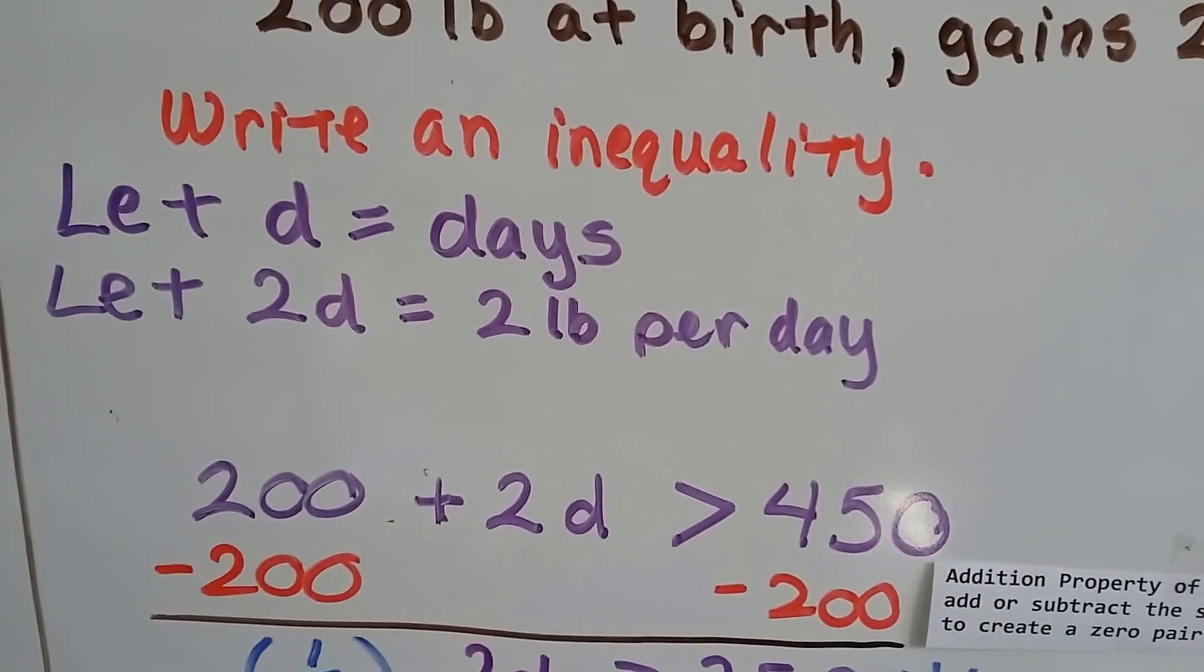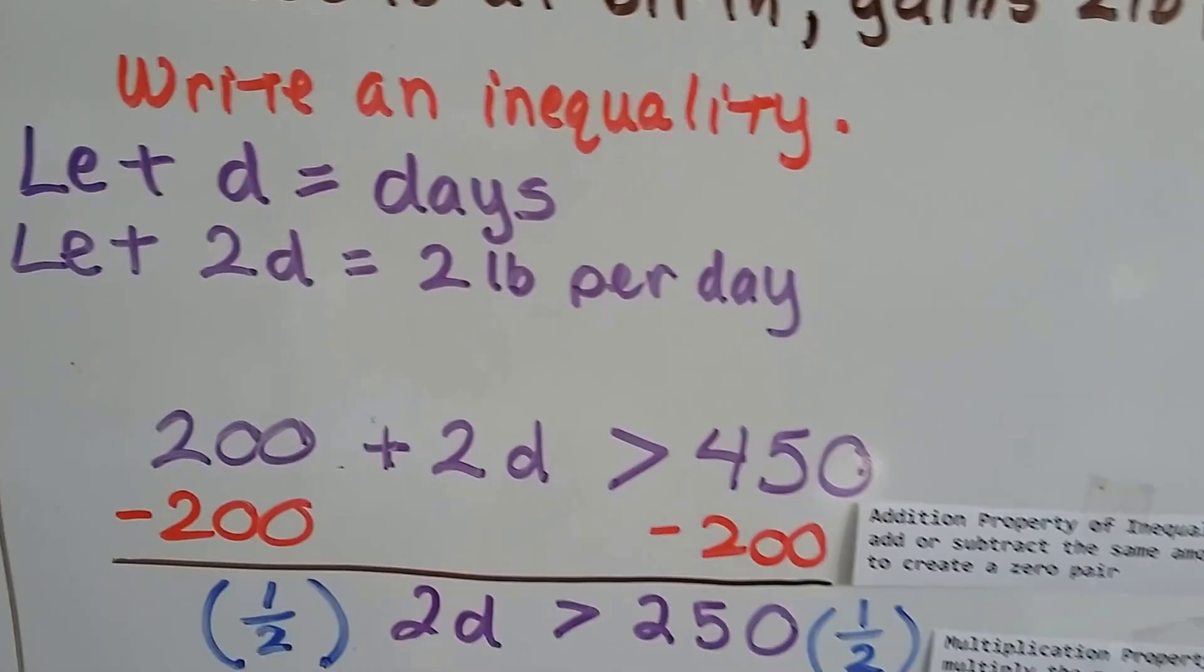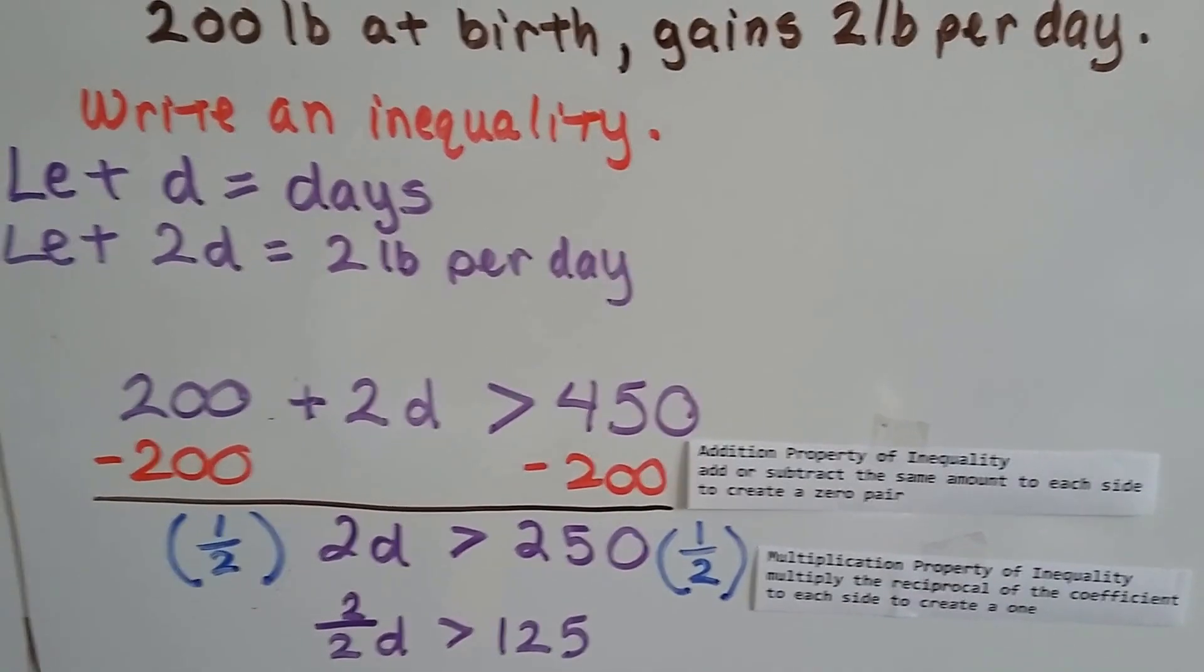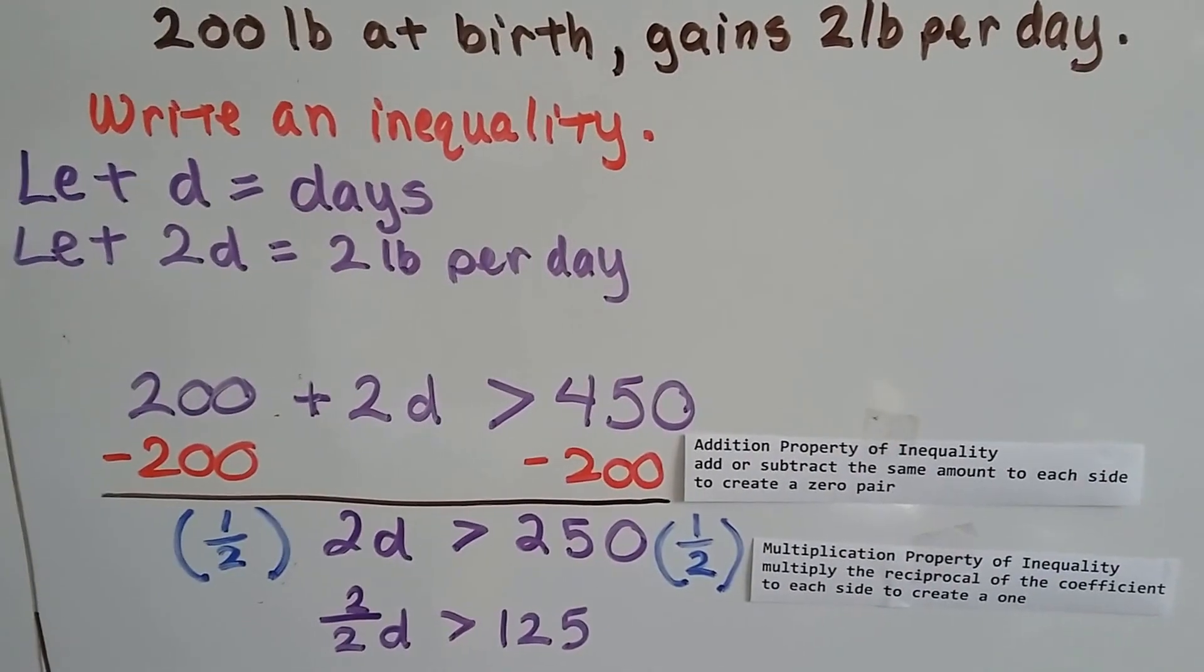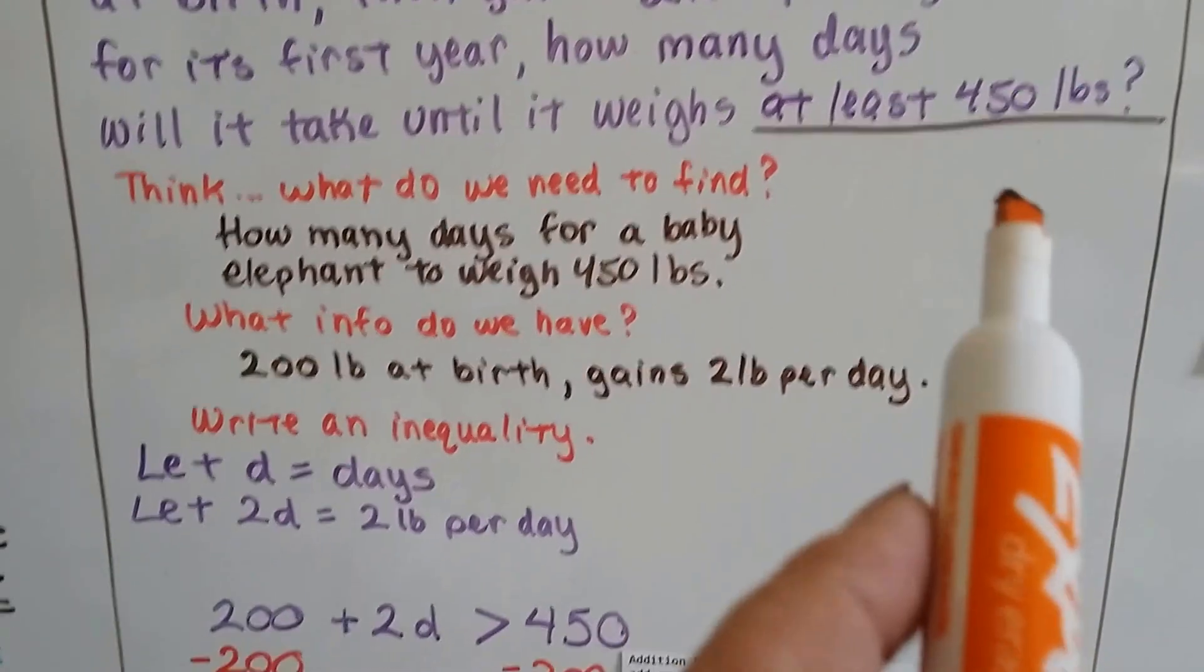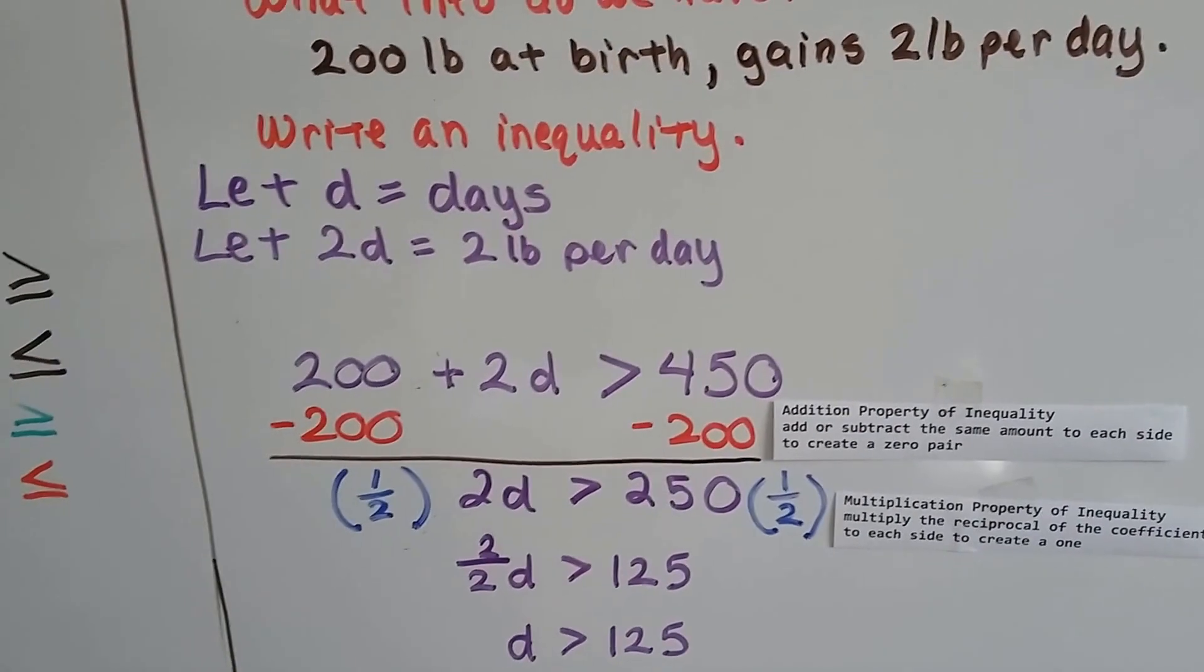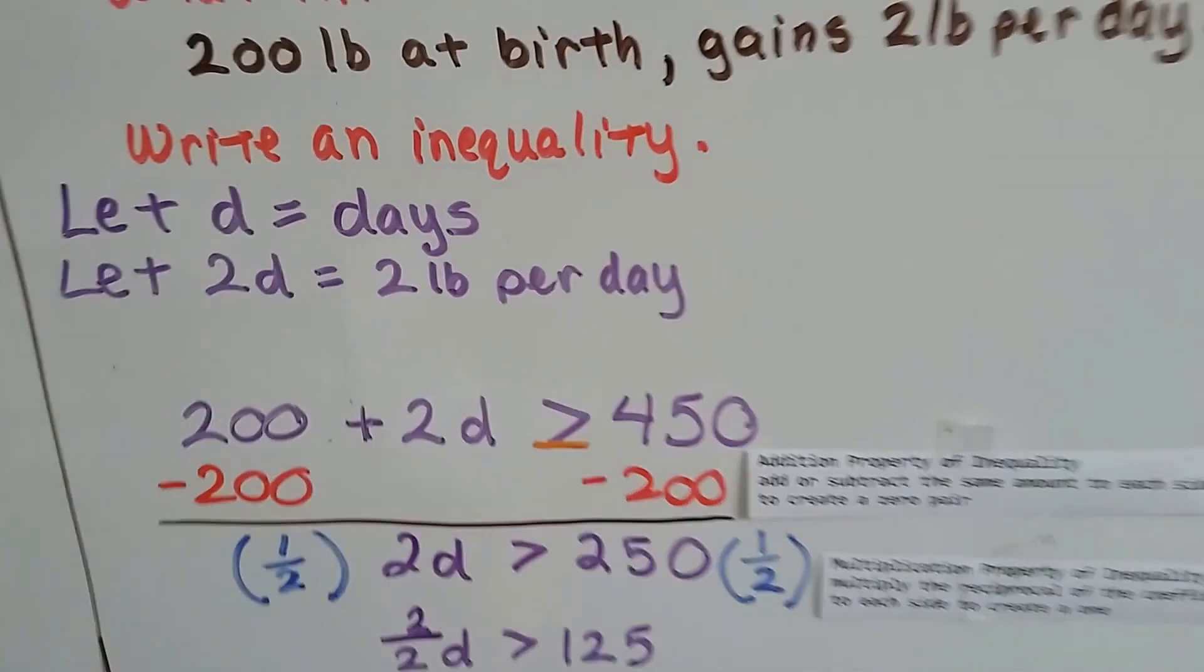So we can write an inequality. We're going to let d equal days and 2d equal the 2 pounds per day. So now our inequality can be written as 200, that's the pounds that it was at birth, plus 2d, 2 pounds per day, is going to be greater than 450. Because remember, it has to be at least 450, so it could be more than 450. So this amount can be greater than 450. So it could be equal to. We could have done this and put a line underneath it.